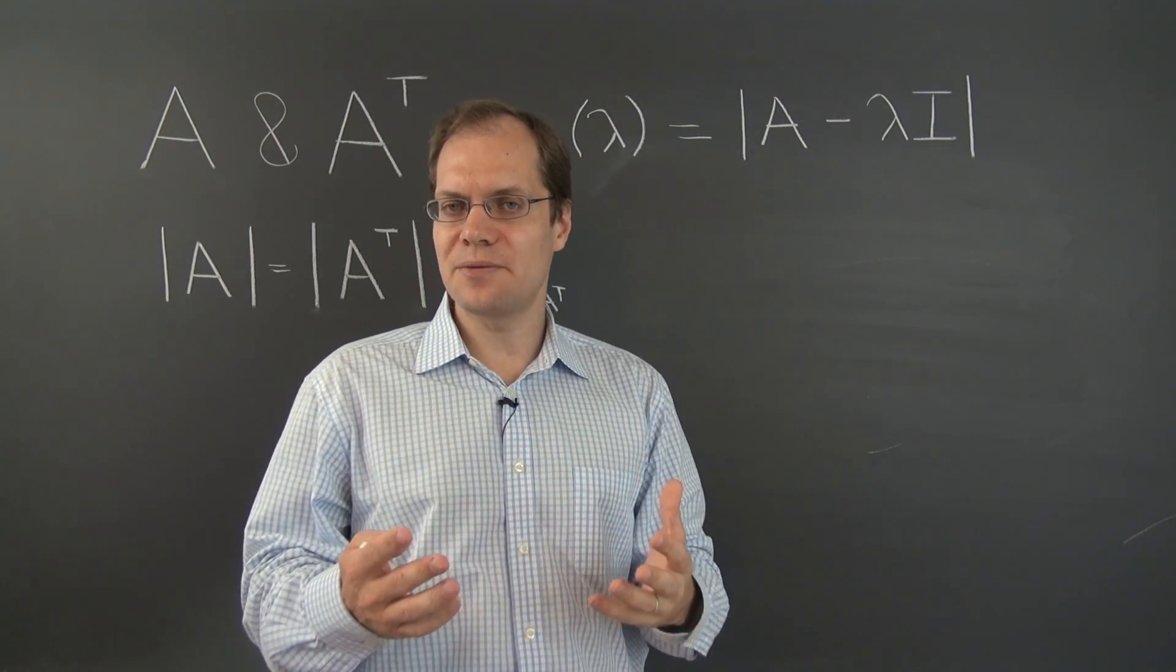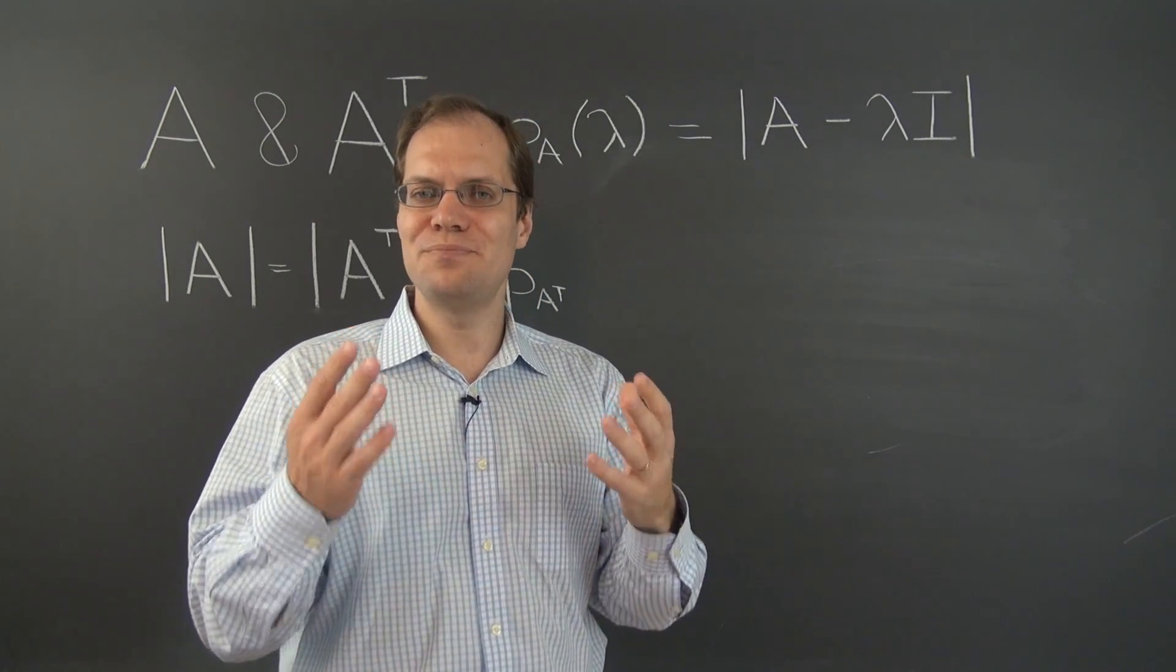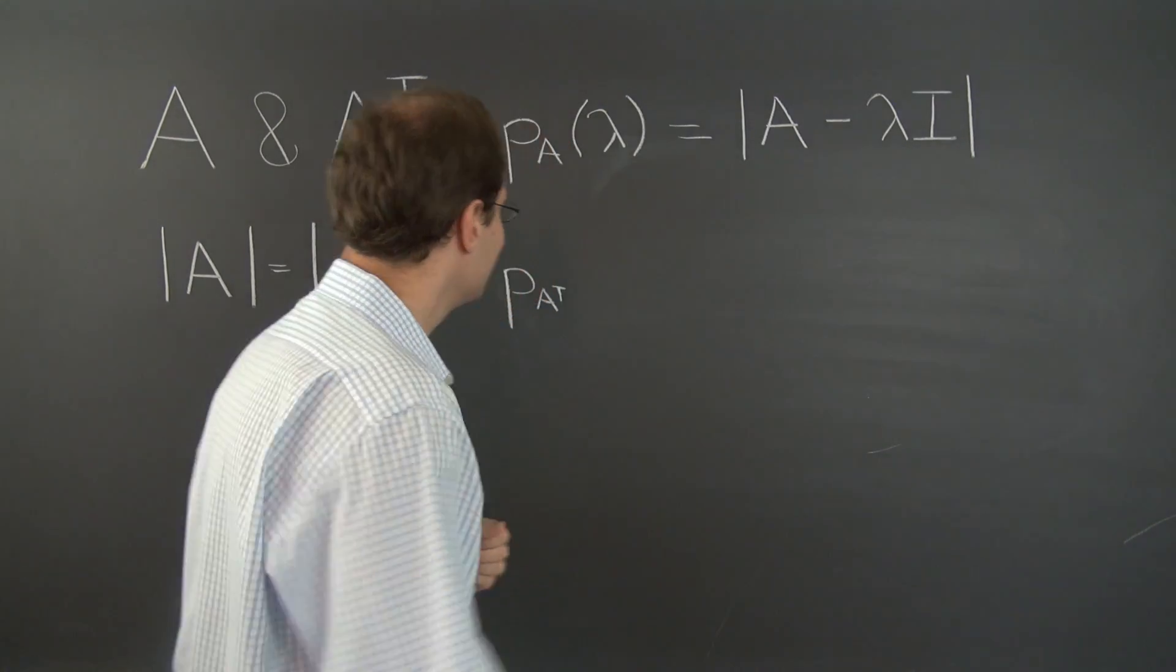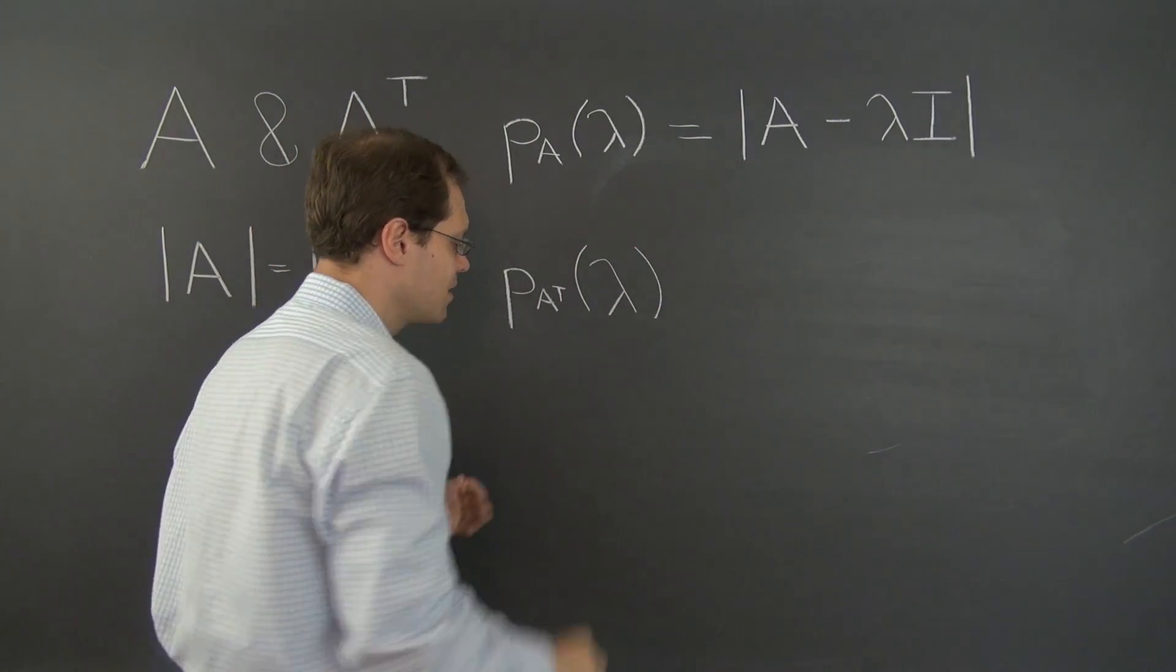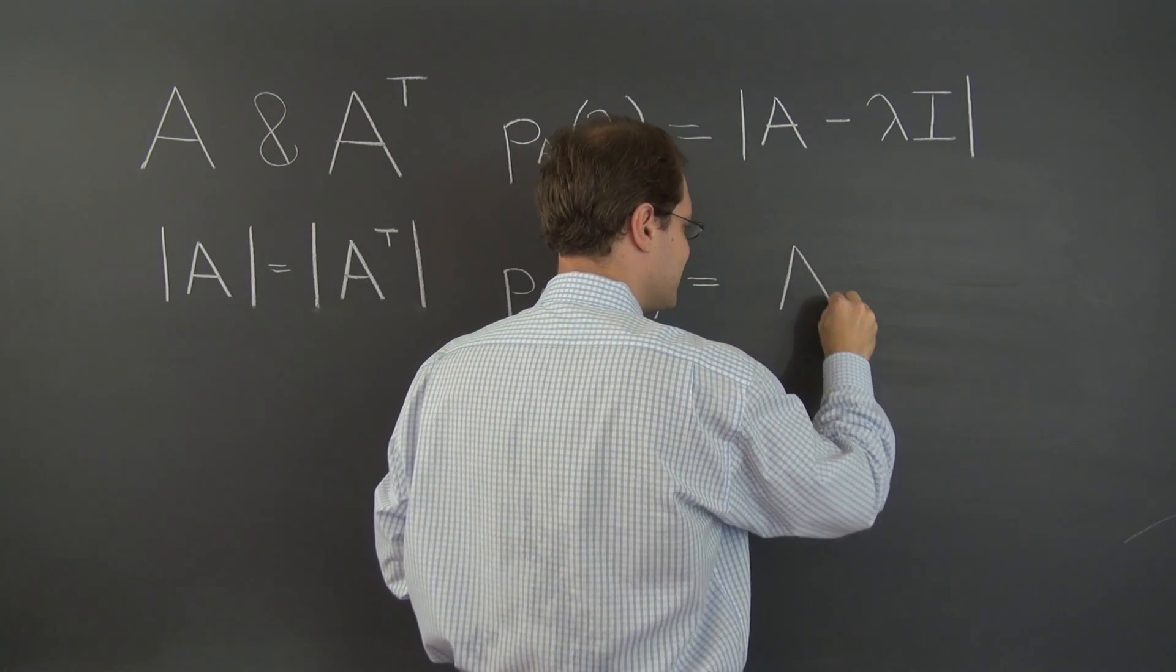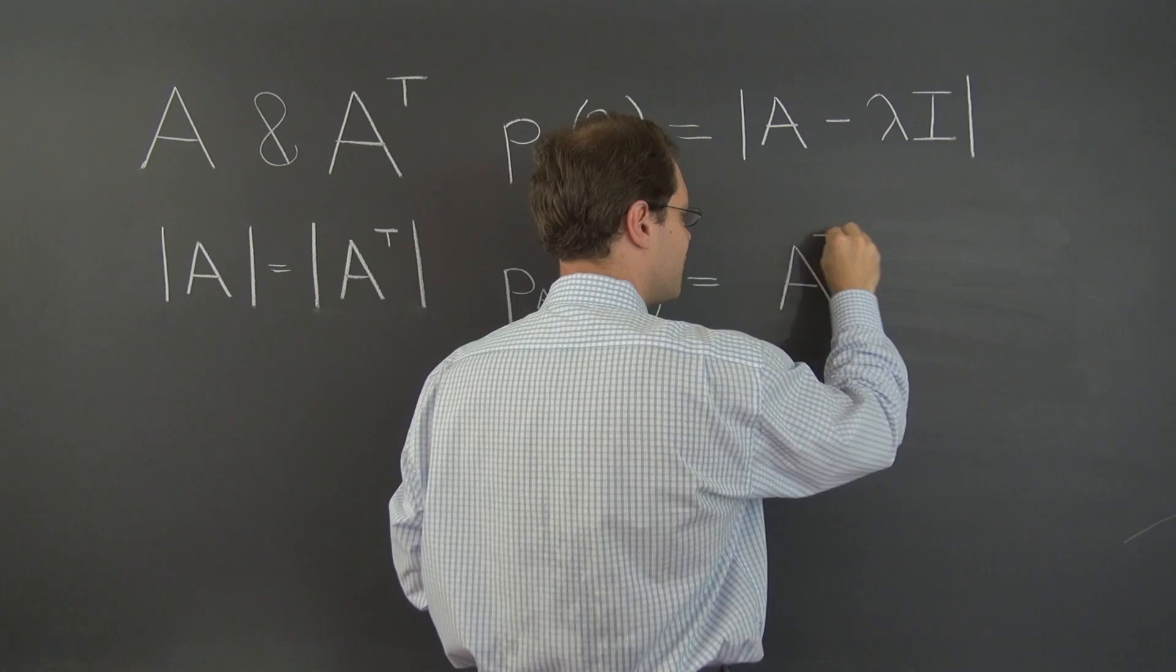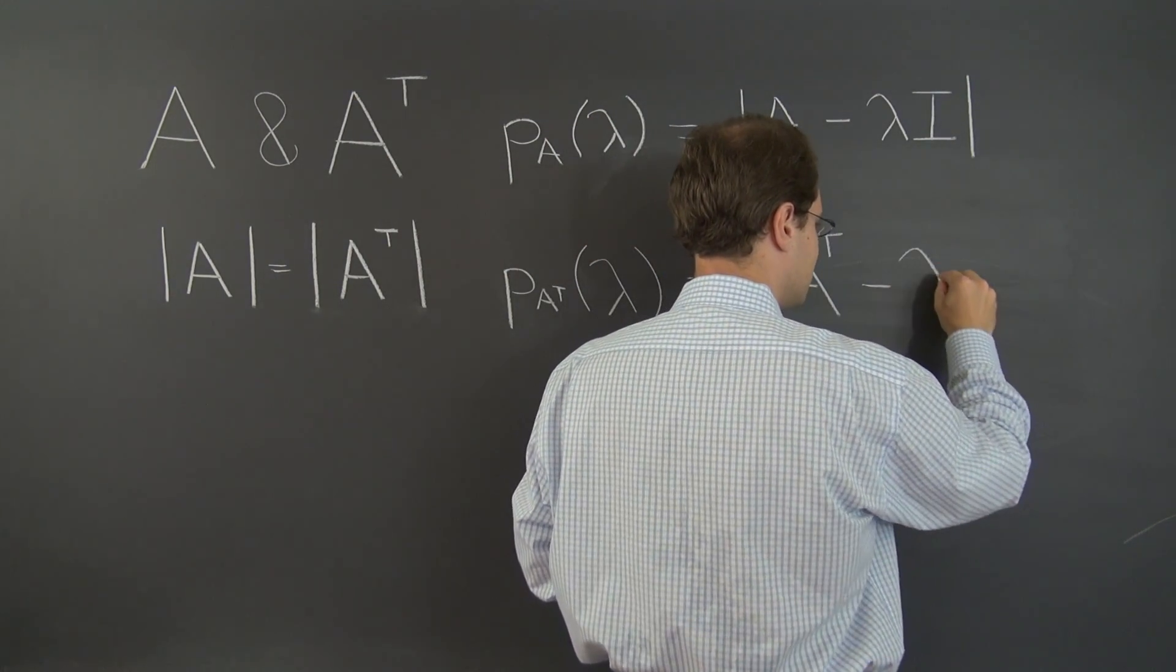Let's now calculate the characteristic polynomial for the matrix A transpose. And I think that you're beginning to see what's going on. So here we go. We have to follow the same procedure, but this time for A transpose. And it involves subtracting lambda from the diagonal of A transpose, which we once again write in the matrix form.